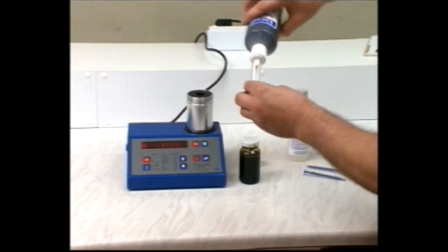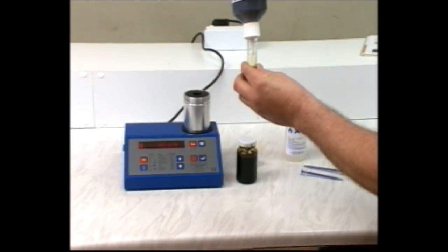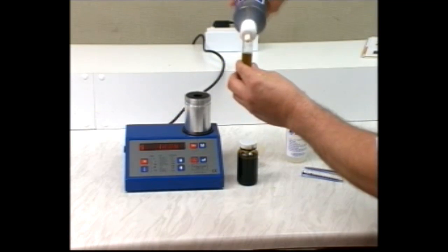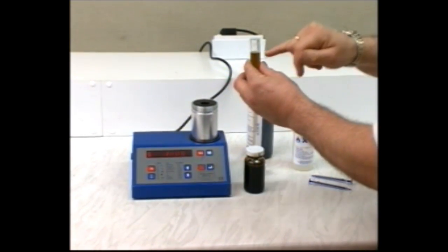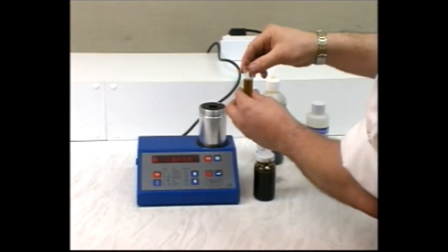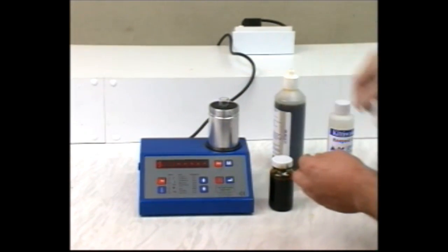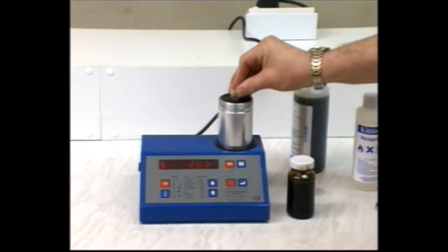Place the cell on the unit and unscrew the end cap. Fill the TAN tube to the fill line with reagent D and place it gently in the cell. Press zero on the unit.